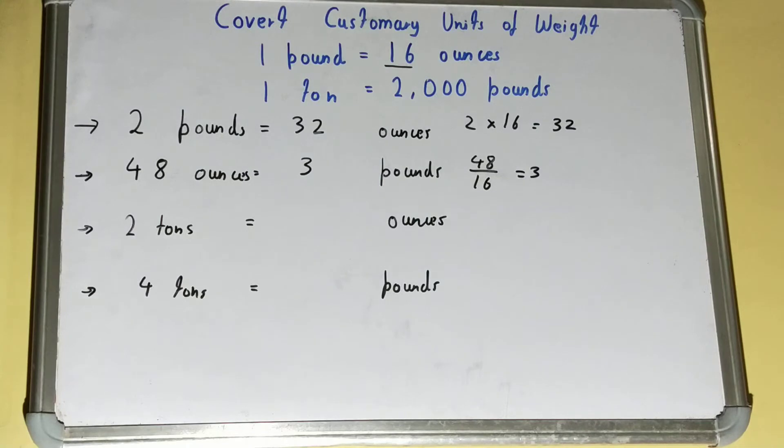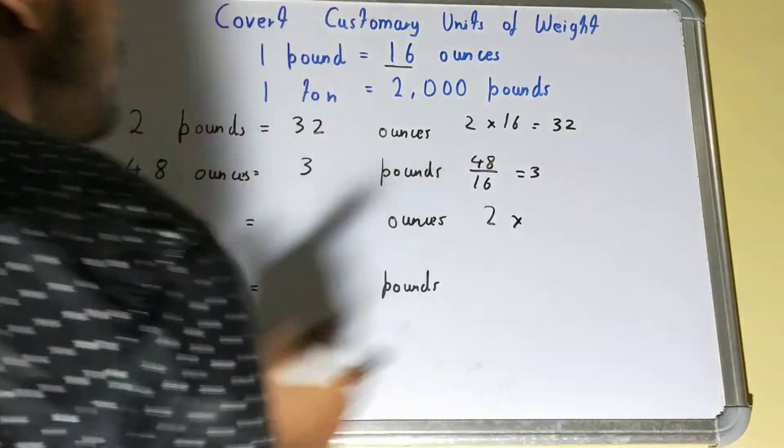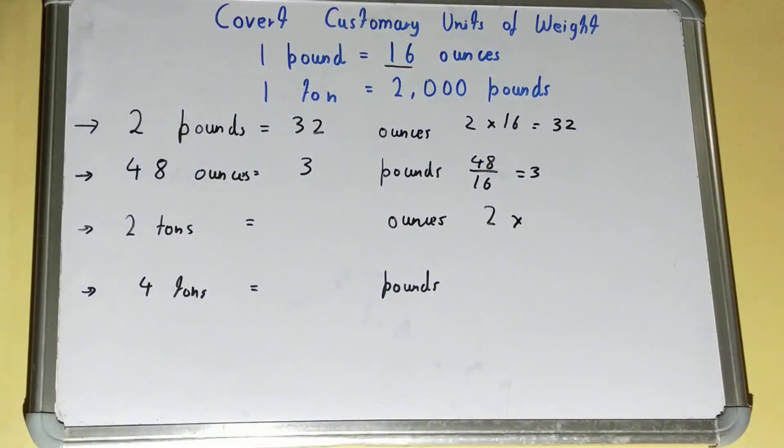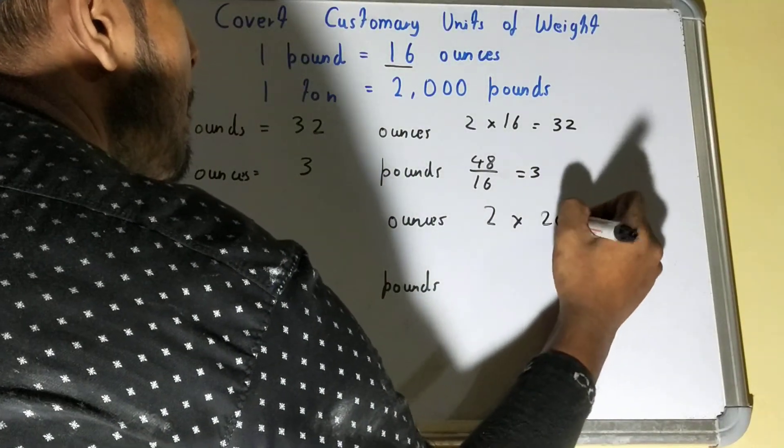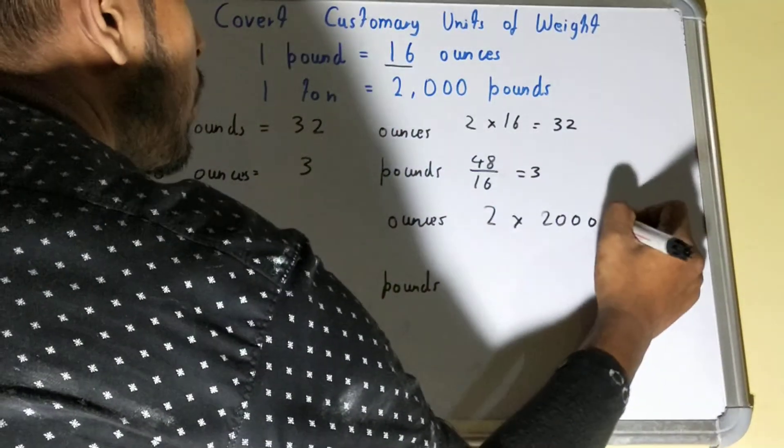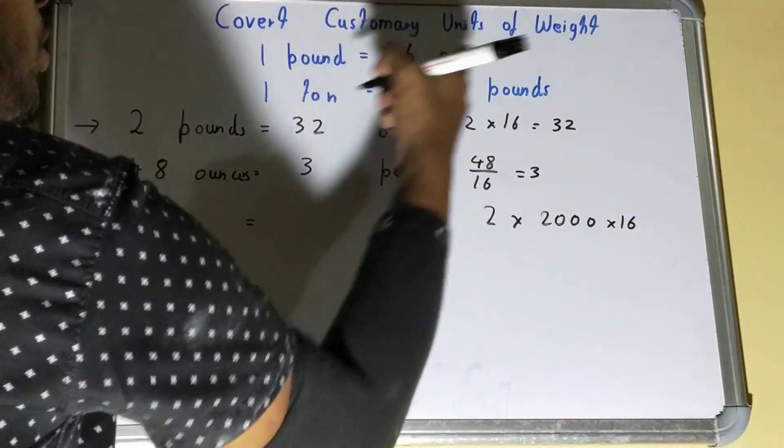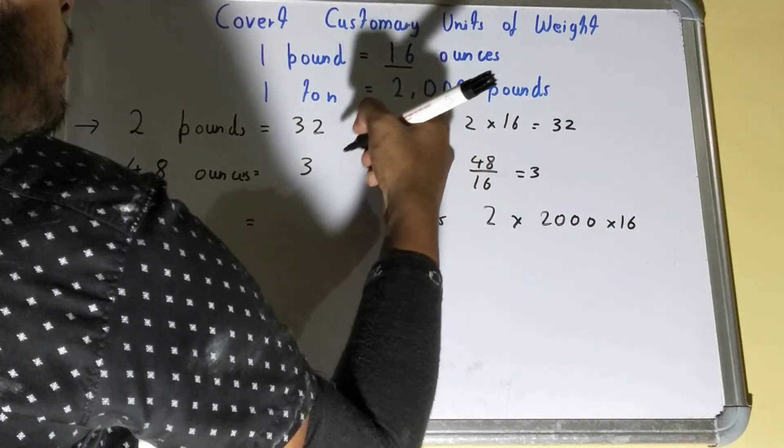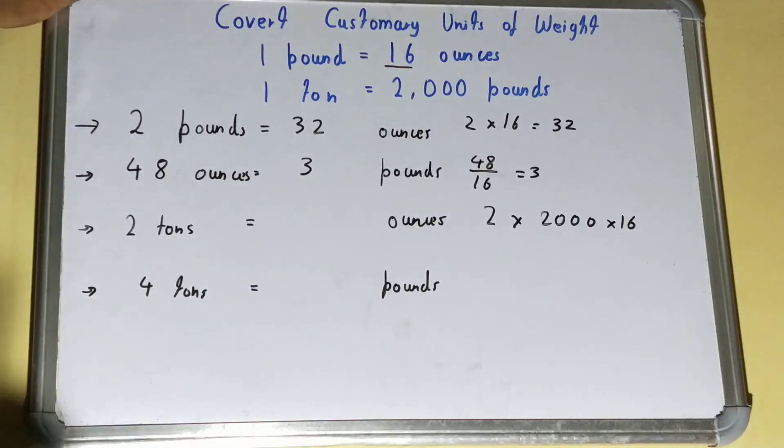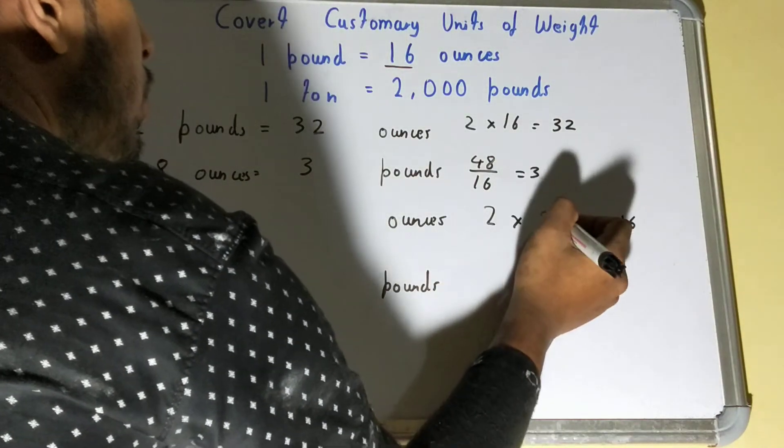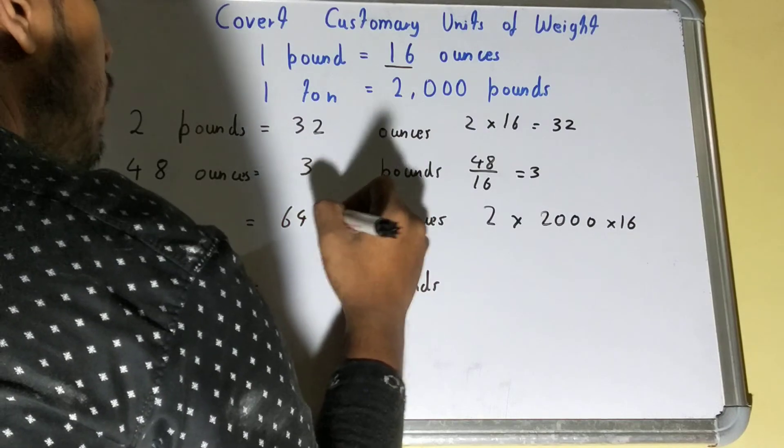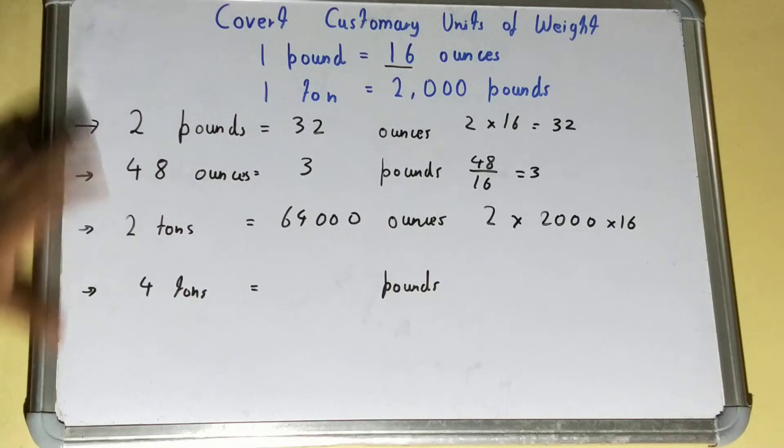Let's see for converting from tons to ounces. Tons is a bigger unit, so we'll multiply. 2 times 2,000 times 16, because from tons to reach ounces we need to multiply both of these, then we'll reach ounces. So it will be 64,000 ounces.